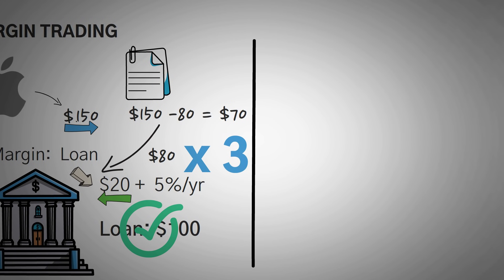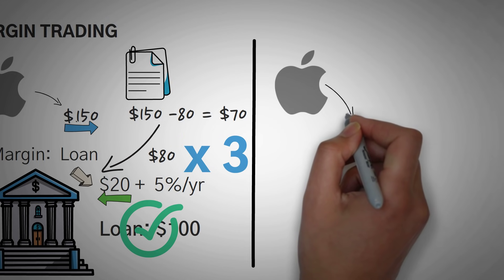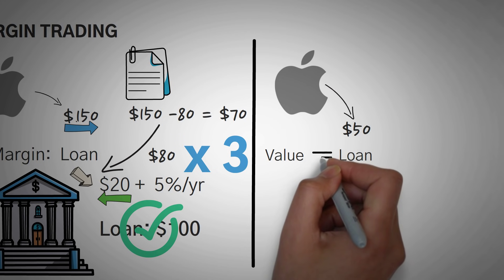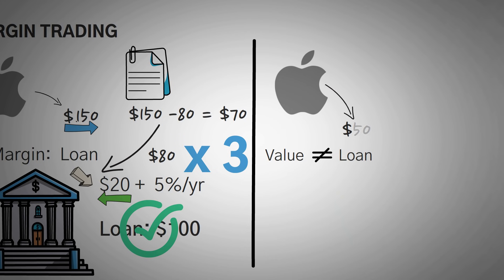You use it when you think something is going to increase in value to multiply your own money. Now, let's take a look at another situation. This is the second scenario, and it's if the stock drops to $50. Well, with margin, you actually have to sell as soon as the value of what you bought can't pay back your loan.